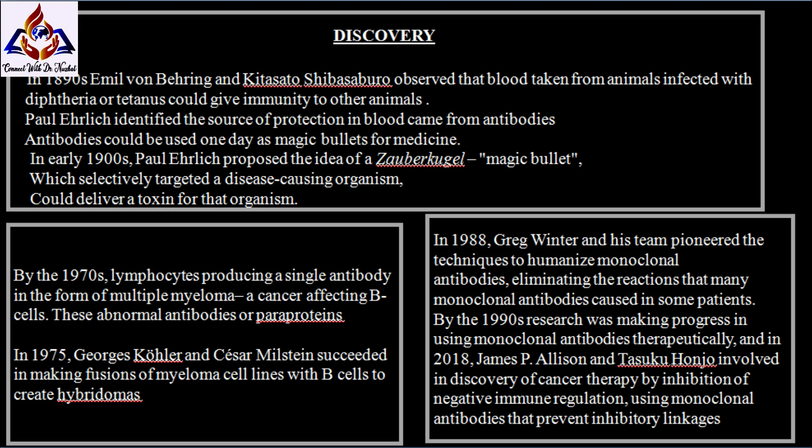Ehrlich and Elie Metchnikoff received the 1908 Nobel Prize for Physiology or Medicine for providing the theoretical basis for immunology. By the 1970s, lymphocytes producing a single antibody were known in the form of multiple myeloma, a cancer affecting B cells. These abnormal antibodies, or paraproteins, were used to study the structure of antibodies, but it was not yet possible to produce identical antibodies specific to a given antigen.